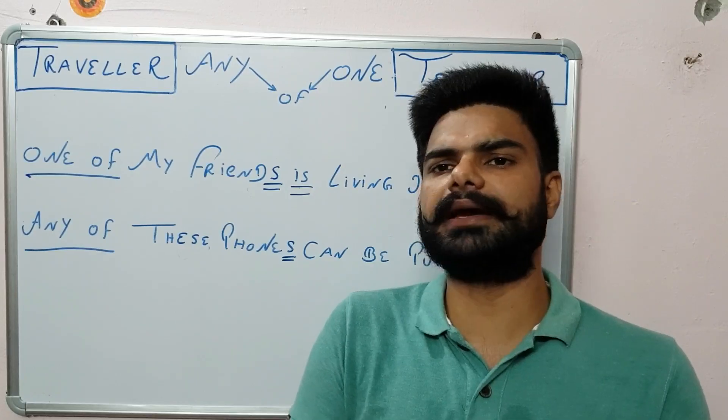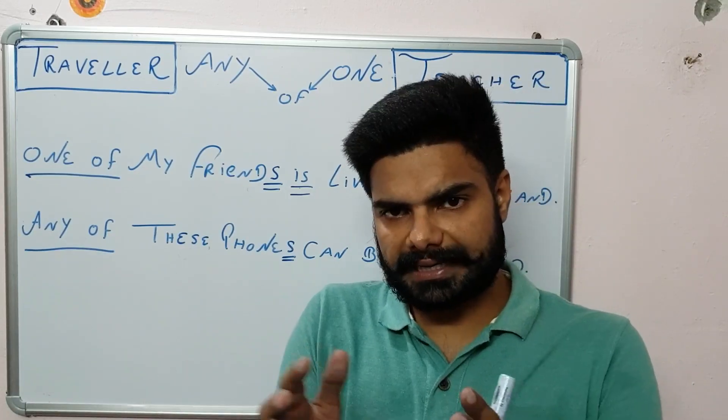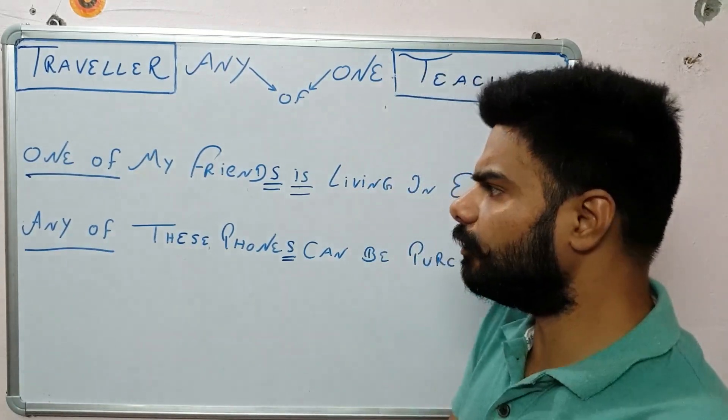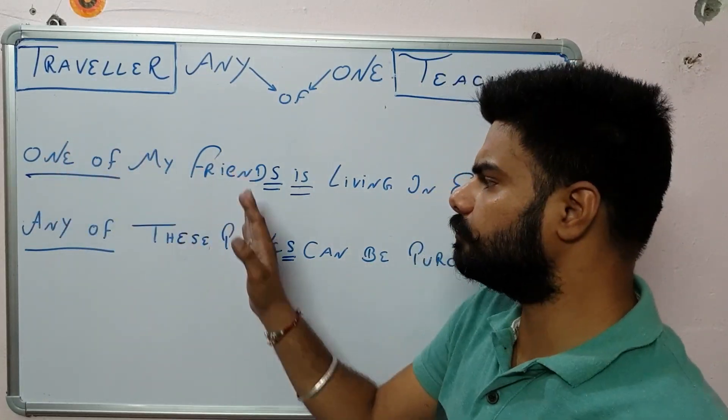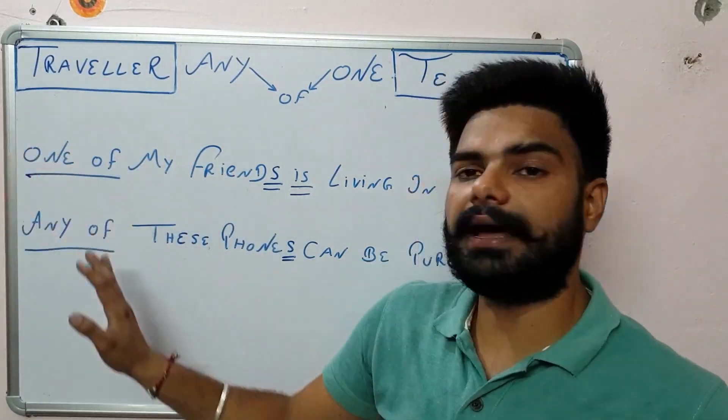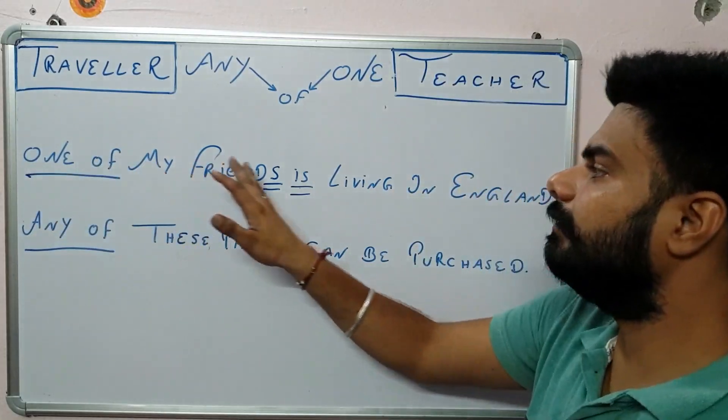If you have just only one thing, you cannot make a selection from one from one. So that's the reason behind this. Why we are using always the plural nouns after the words one of and any of. So one of my friends is.